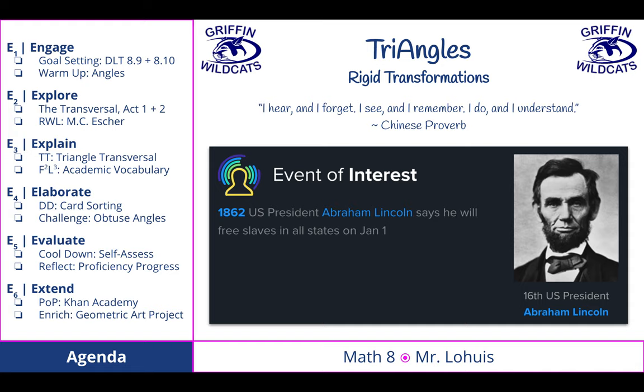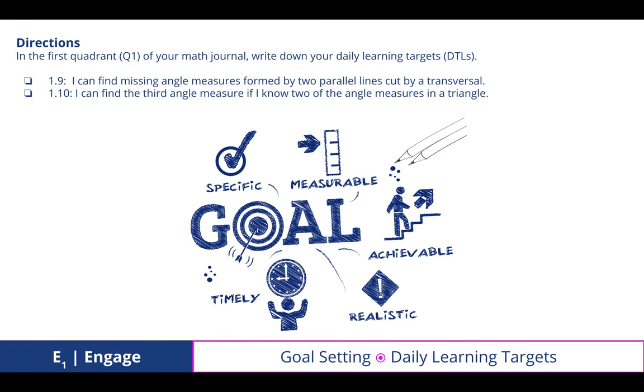On the left is your agenda. So let's get started. In the first quadrant of your math journal, write down your daily learning targets. I can find missing angle measures formed by two parallel lines cut by a transversal, and I can find the third angle measure if I know two of the angle measures in a triangle.